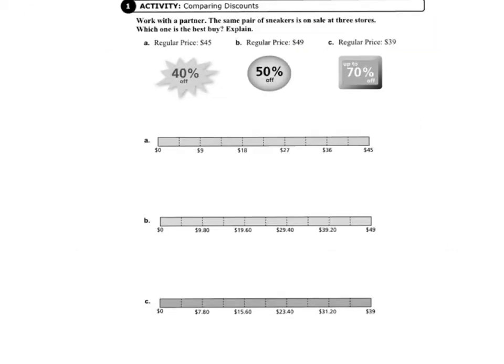Today we'll be working on page 133 in your Record and Practice Journal. Activity 1, we are comparing discounts. The same pair of sneakers is on sale at three stores. Which one is the best buy? And we have to explain our answer.